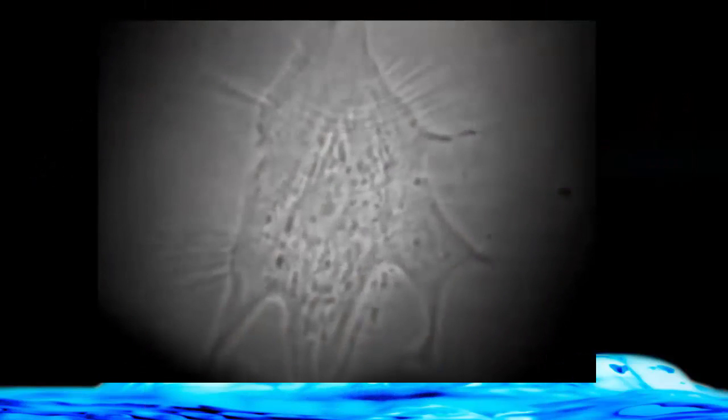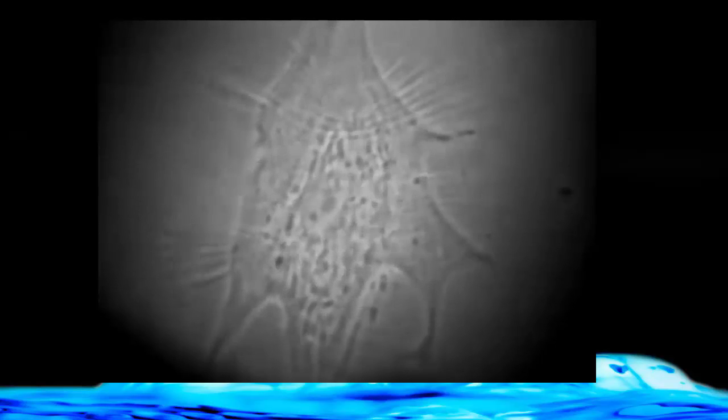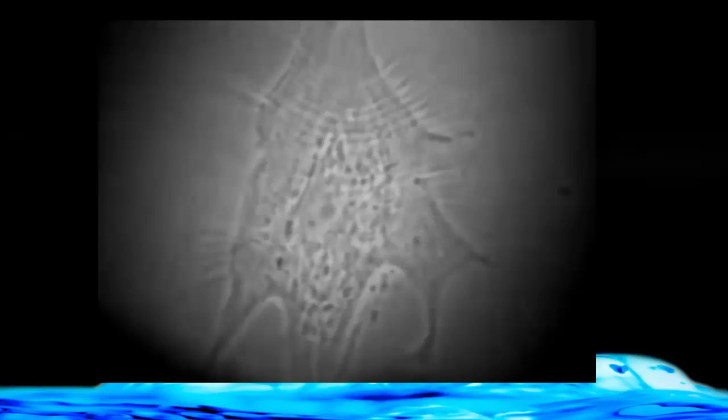Each cardiac muscle cell has the ability to depolarize and contract on its own, and the heart does not need neurons to stimulate it to contract. As a matter of fact, if all the nerves to the heart were cut, it would still function.